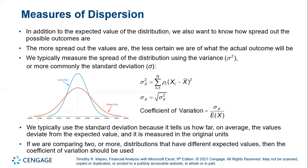Measures of dispersion. In addition to the expected value of the distribution, we also want to know how spread out the possible outcomes are. The more spread out the values are, the less certain we are of what the actual outcome will be. We typically measure the spread of the distribution using the variance, or more commonly, the standard deviation.